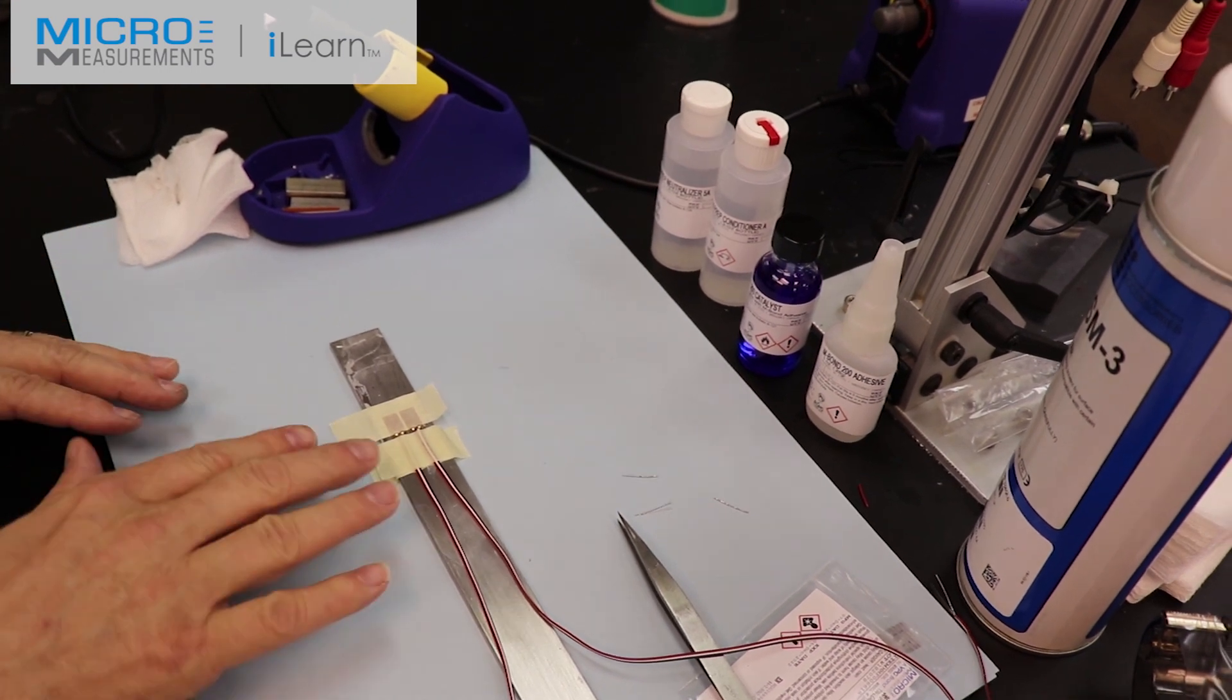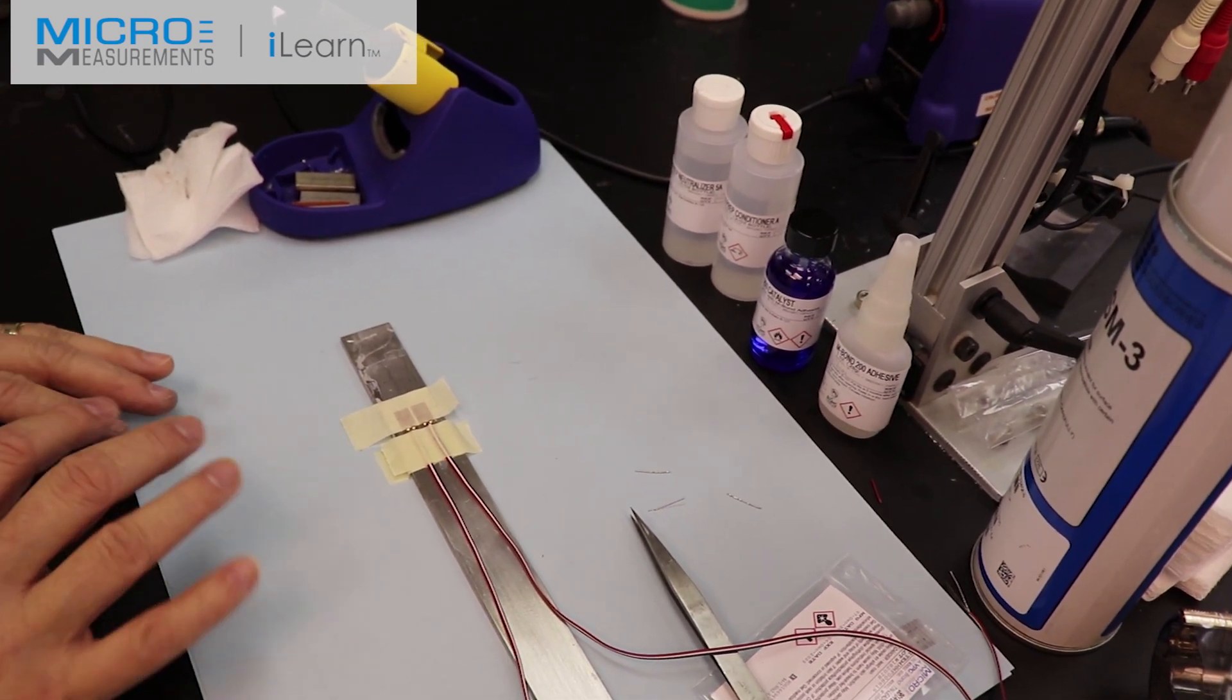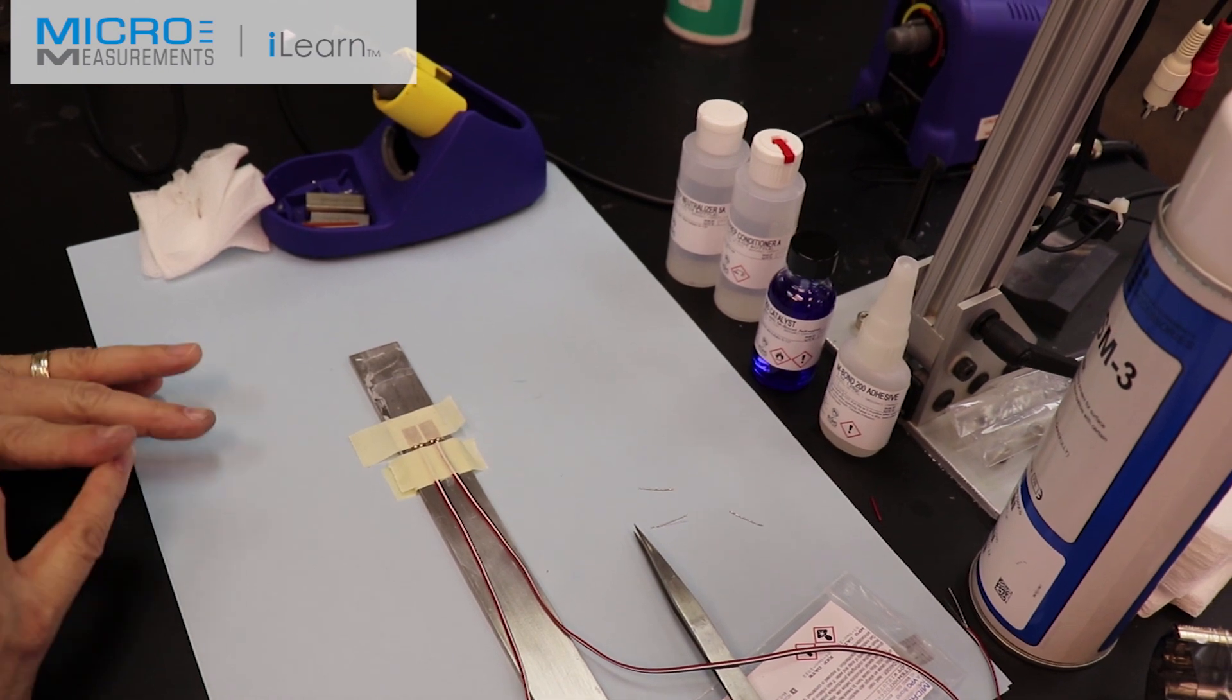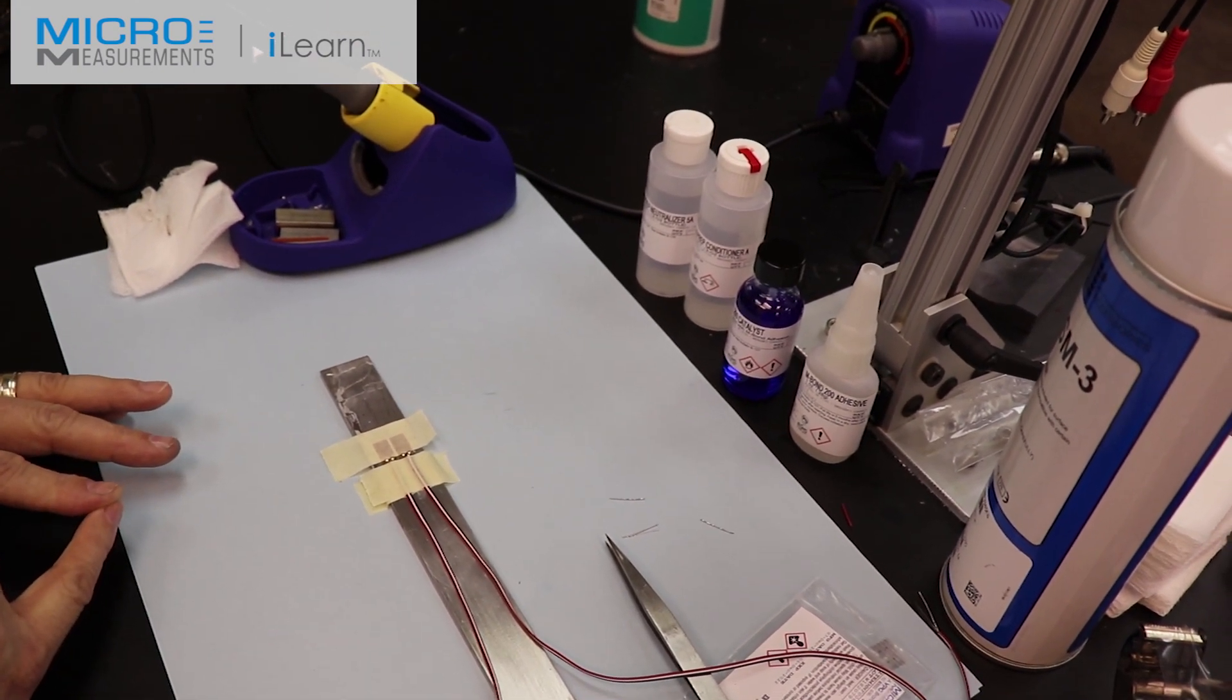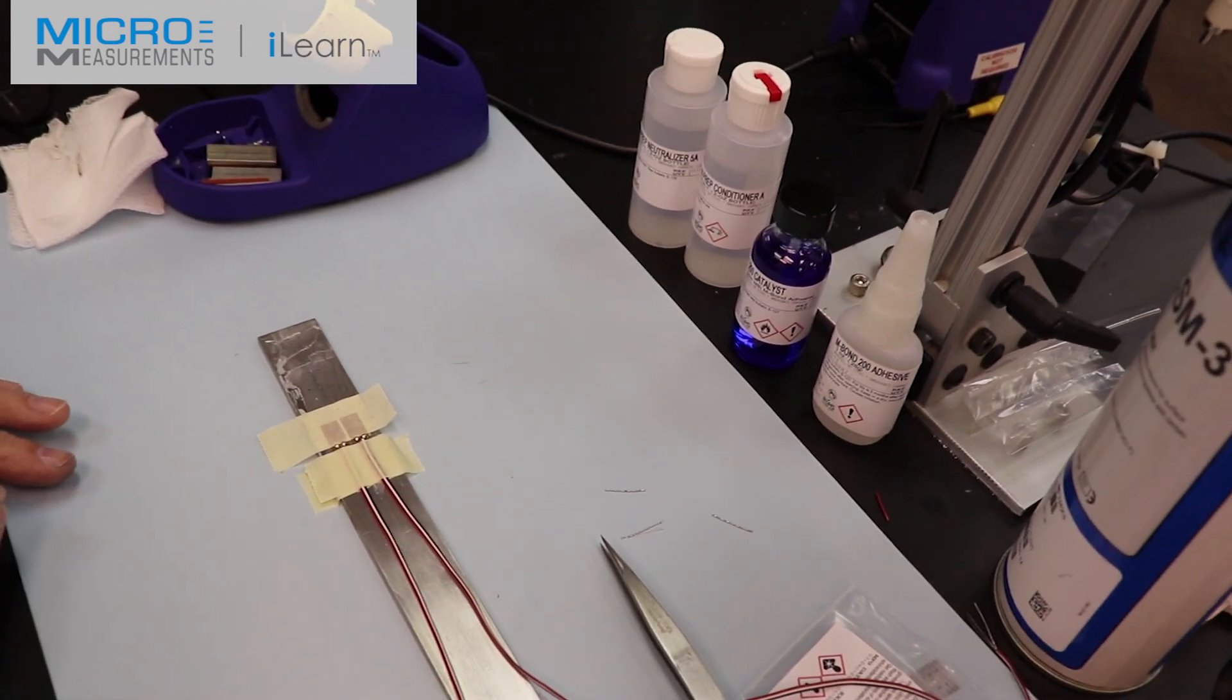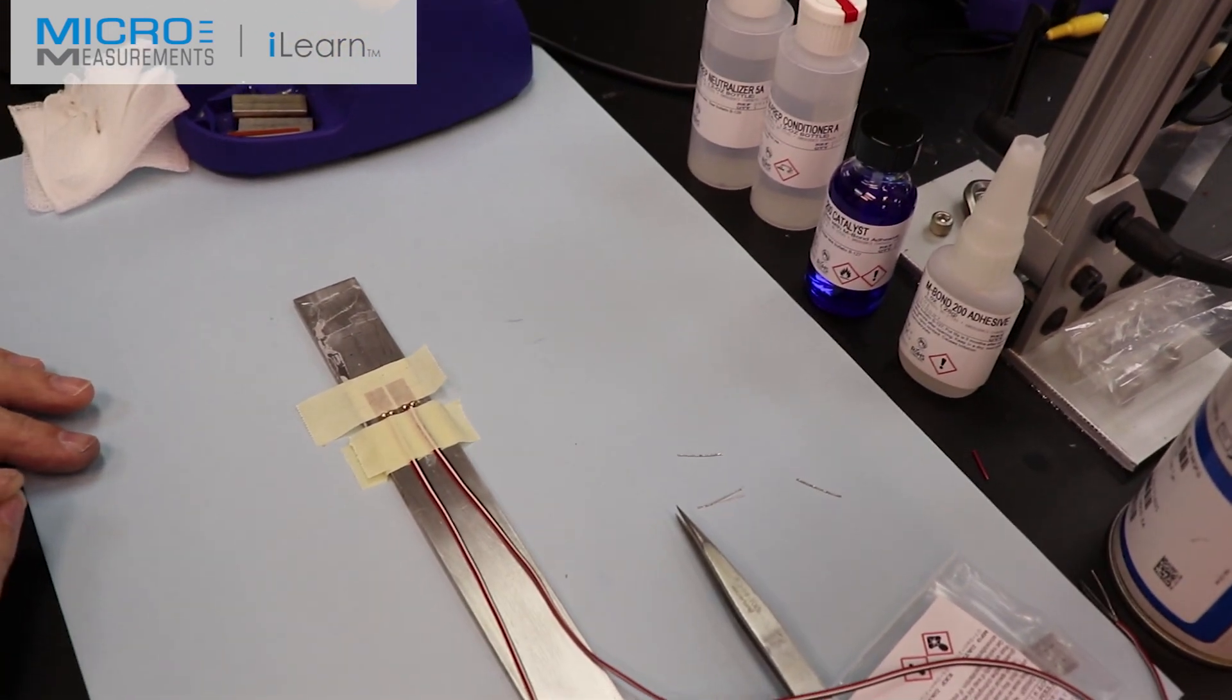So the very next step for us once we've got the leads in place is now to start removing this tape and more importantly remove any residual flux that may have been left behind from the soldering process. So we're going to do that next.